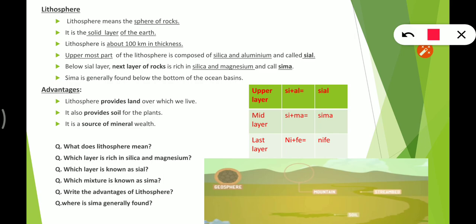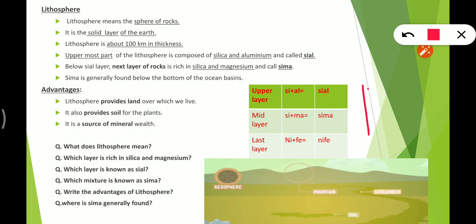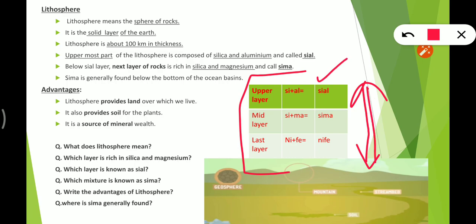Lithosphere means sphere of rocks — the area which has rocks. We are talking about the land and the soil here. The solid layer of the earth is the lithosphere. If we talk about its thickness — the land you see goes deep inside; if you keep digging downward, its thickness is 100 km. Even if you dig 100 km, nothing different will come out from inside.